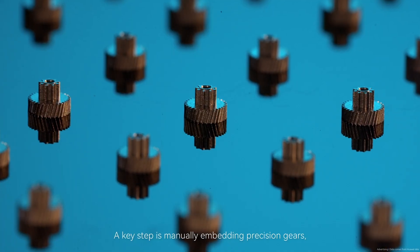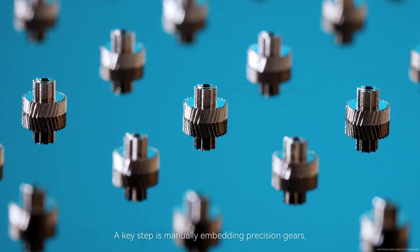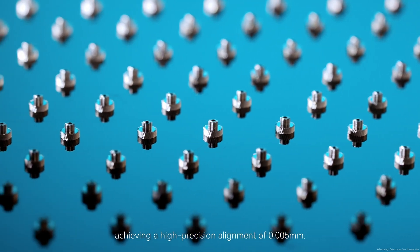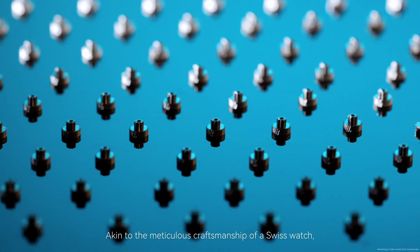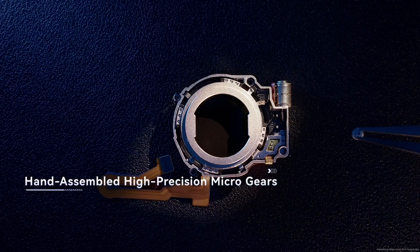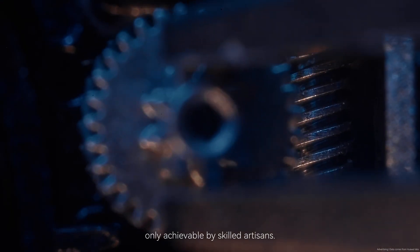A key step is manually embedding precision gears, achieving a high precision alignment of 0.005 mm, akin to the meticulous craftsmanship of a Swiss watch, only achievable by skilled artisans.